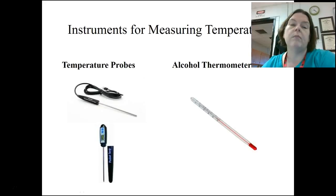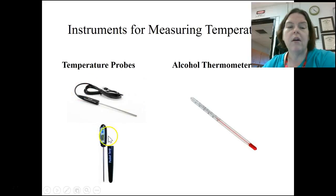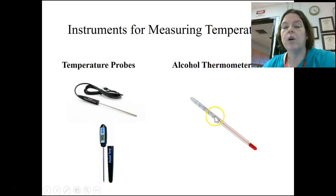Instruments for measuring temperature: volume, mass, and temperature are the three things we measure most often in this class. We can go high-tech with probeware — we have a Vernier probe that hooks into probeware. Or we can use a pocket thermometer that gives an automatic display reading. The Vernier probe needs to be plugged into a calculator or computer. Or we can use the old-fashioned alcohol thermometer — those work too, and we use them in a pinch.